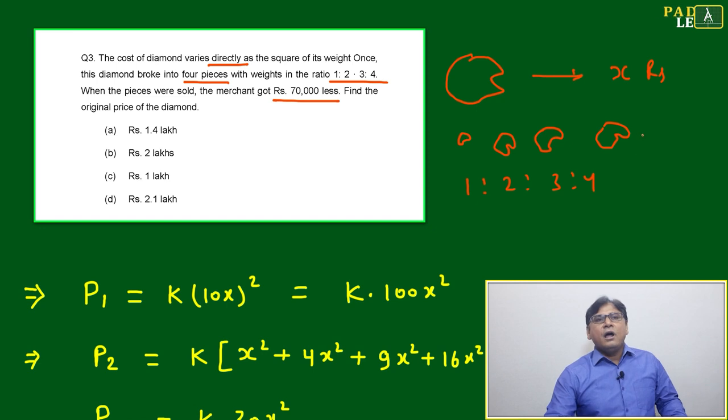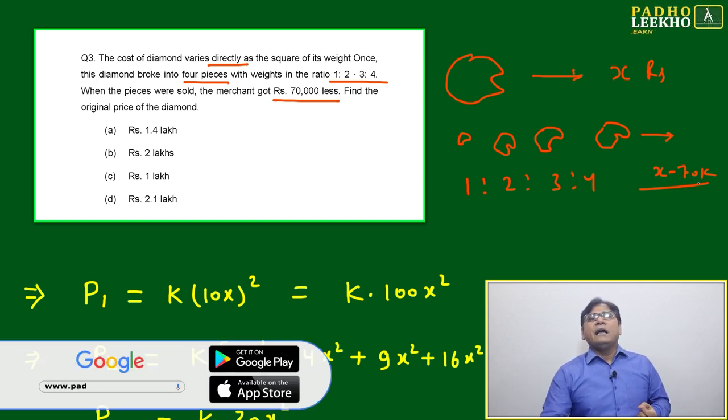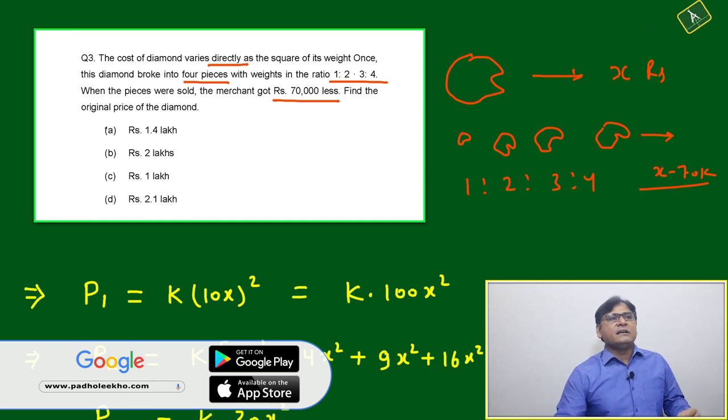Afterwards, combinedly when he is selling, he is getting seventy thousand less. Whatever earlier he was supposed to get as a solid stone or one piece diamond, he is getting seventy thousand less. Find the original price of the diamond.